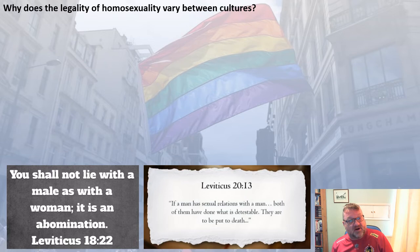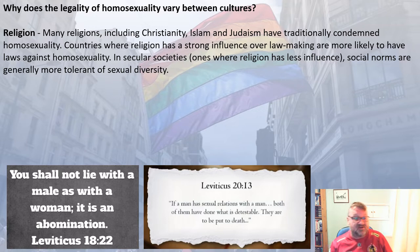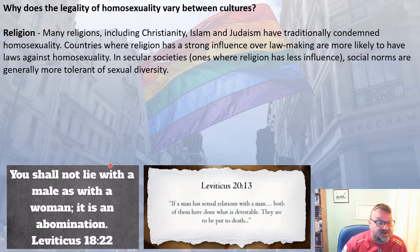Why does homosexuality law vary? Again it goes back to religion. Many religions, including Christianity, Islam, and Judaism, have traditionally condemned it, and countries where religion has a strong influence over law-making are more likely to have laws against homosexuality. The Book of Leviticus states: 'You shall not lie with a man as with a woman — it is an abomination,' and later prescribes death: 'If a man has sexual relations with a man, both have done what is detestable; they are to be put to death.'